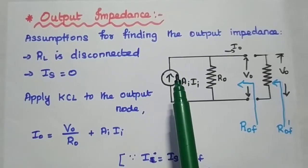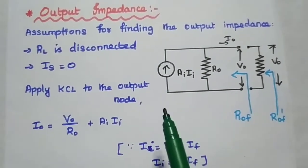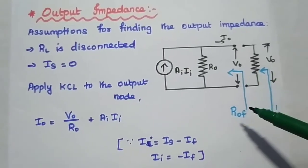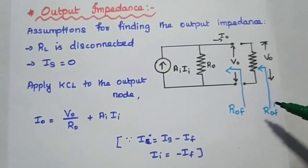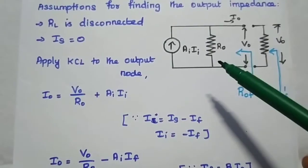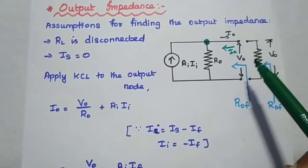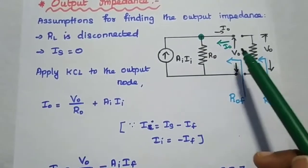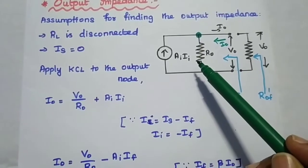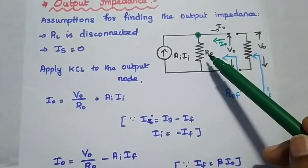Next we are going to analyze output impedance. For finding the output impedance we have to make two assumptions: first, disconnect the load resistance, and second, set the input source signal to zero. After disconnecting the load resistance, we find the output impedance with feedback. Here we apply KCL to the output node. The feedback signal is io and the voltage across this point is vo. After applying KCL, we get io equal to vo divided by ro plus ai·vi.